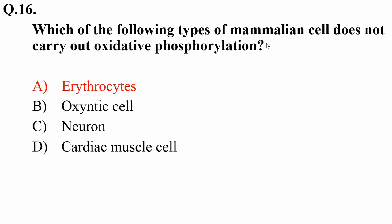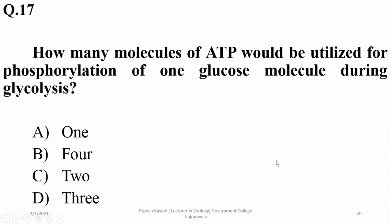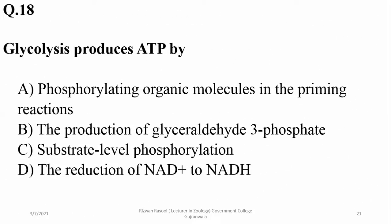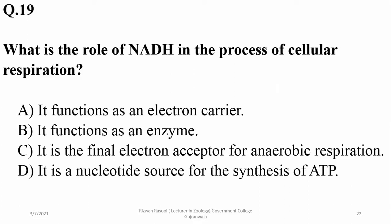How many molecules of ATP would be utilized for phosphorylation of one glucose molecule during glycolysis? Obviously two ATP molecules are required during the preparatory phase. Glycolysis produces ATP by substrate-level phosphorylation. What is the role of NADH in the process of cellular respiration? NADH is a nucleotide source for the synthesis of ATP during respiration.